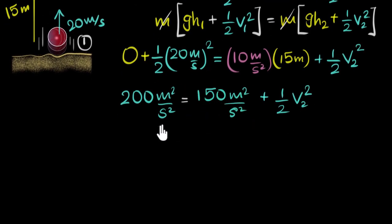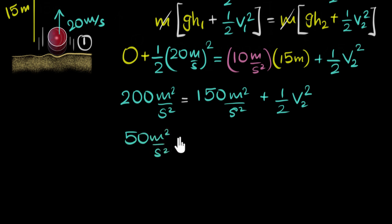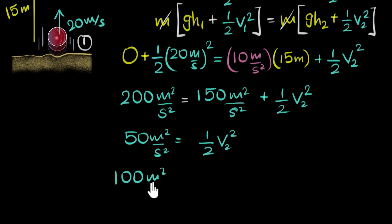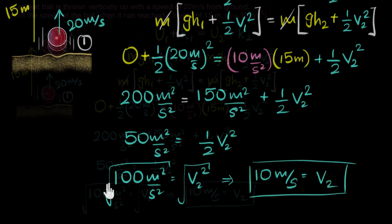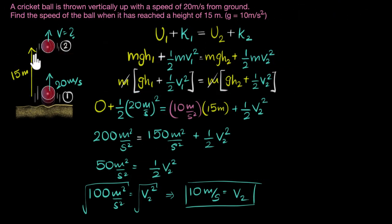Subtracting 150 from both sides: 200 − 150 = 50, so 50 = ½V₂². Multiplying both sides by two gives 100 m²/s² = V₂². Taking the square root on both sides, we get V₂ = 10 meters per second. That's our answer.